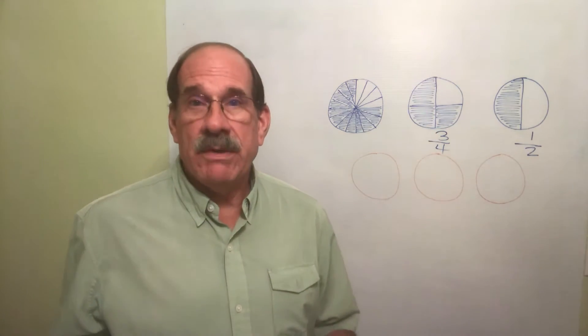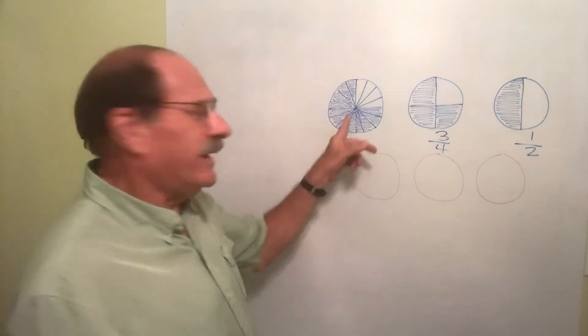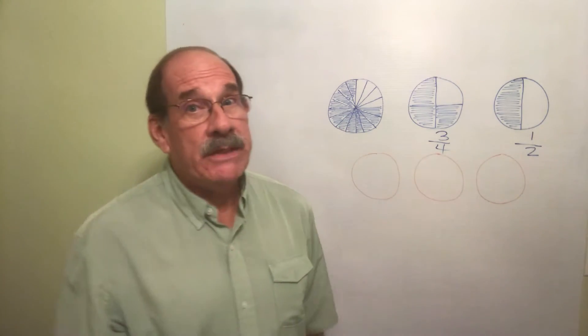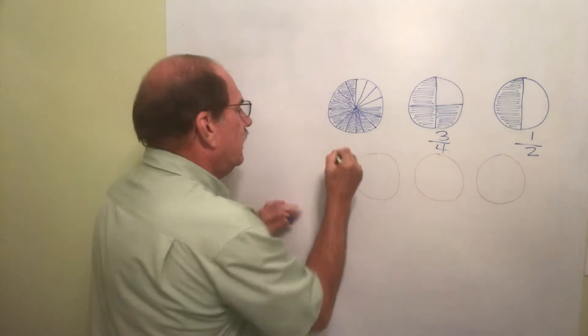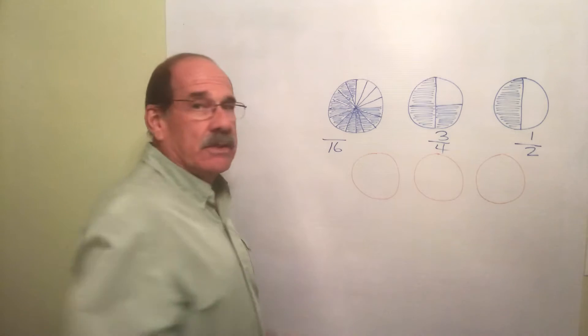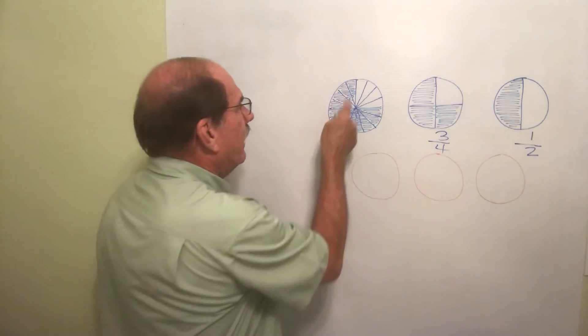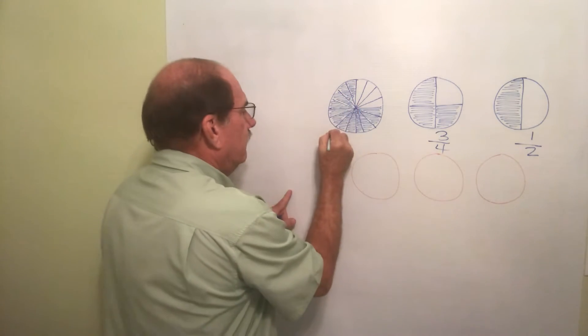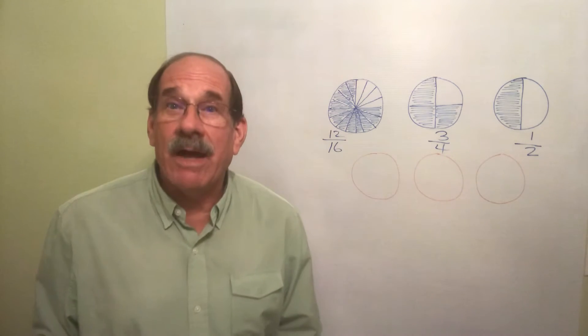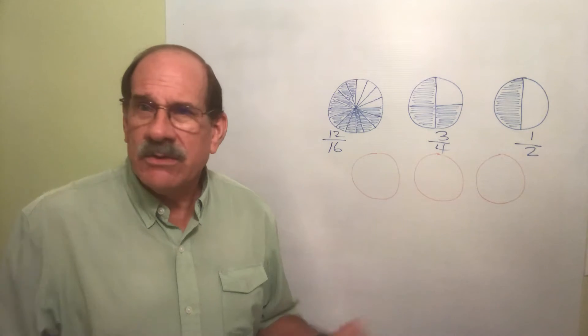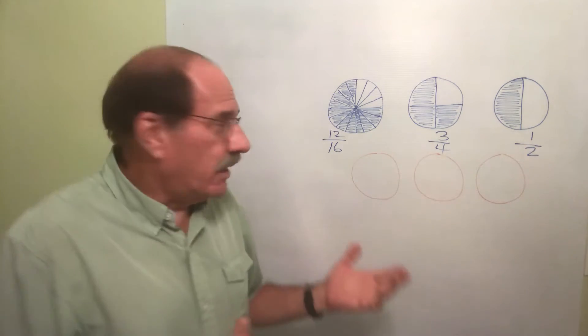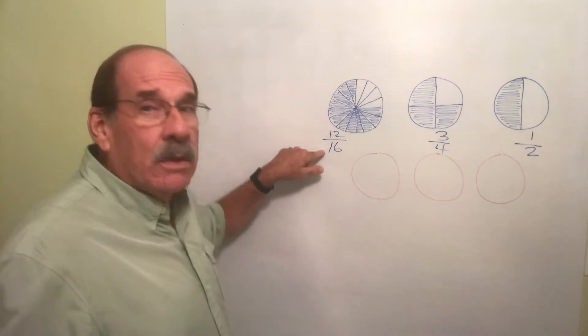But I get how many of them? One, two, three - I get three of those four pieces. I get three fourths of a pizza. Look at this pizza - I cut this pizza into sixteen pieces and I get twelve of them. I get 12/16ths of a pizza.